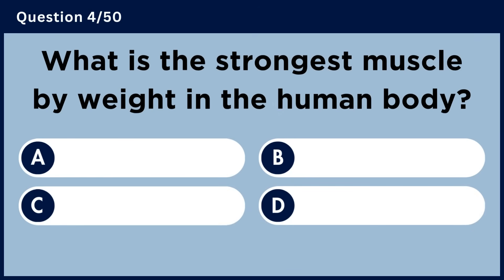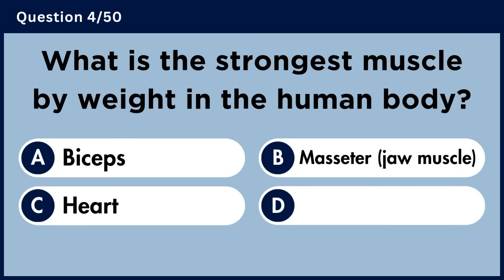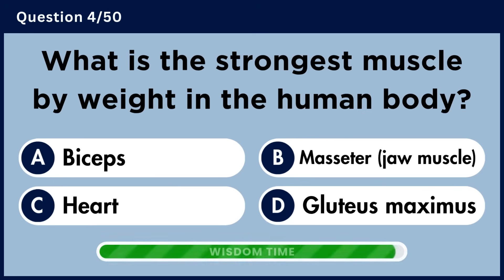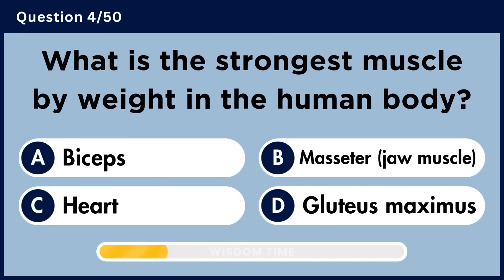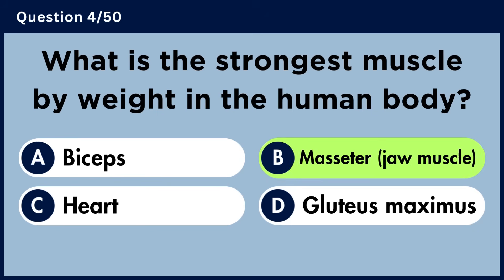What is the strongest muscle by weight in the human body? Answer B: Masseter — the jaw muscle.